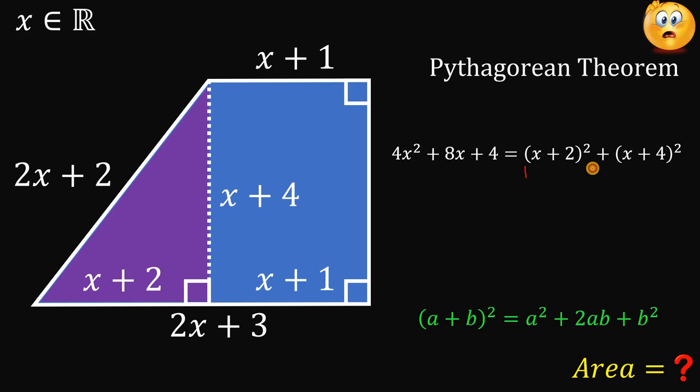Now, how about the value of x plus 2 raised to the power of 2? This can be written using this identity. We have x squared plus 4x plus 4. So, x plus 2 raised to the power of 2 equals x squared plus 4x plus 4. Plus, the equivalent value of x plus 4 raised to the power of 2, and this is just equal to x squared plus 8x plus 16.